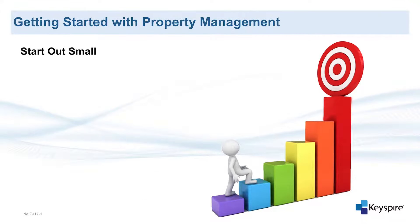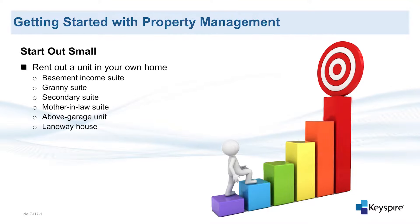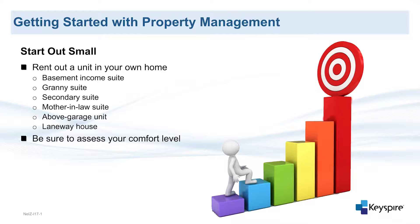If you are not yet sure if managing an investment property is right for you, you do have the option of starting small. If possible, you can begin with renting out a unit in your own home. You may have a property with a basement income suite or a basement with the opportunity to add a legal income suite. Some properties have granny suites, a secondary suite, or a mother-in-law unit. These can include an above-garage unit, a laneway house, or an additional structure on the property. If you own one of these or have the option to add one, you can begin managing a rental property on a smaller scale. This will provide you with some extra income and allow you the opportunity to see if you like being a landlord. Of course, some people are not comfortable with the thought of strangers living in their homes, so you will want to assess your comfort level.